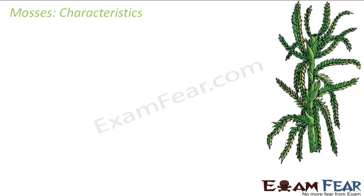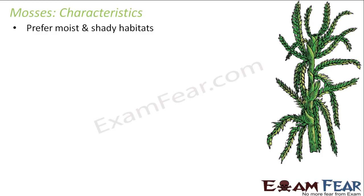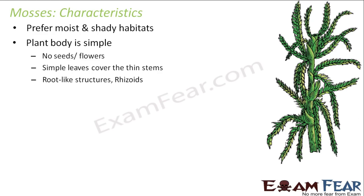So let us look at the next category, that is mosses. The liverworts are done, now let us talk about mosses. These mosses also prefer moist and shady habitats. In mosses as well, there are around 12,000 species that exist on this earth, which is again a huge number. These are generally non-woody plants. You do not have that wood part of the plant, or those root-like structures. The plant body is simple, no seeds, no flowers.